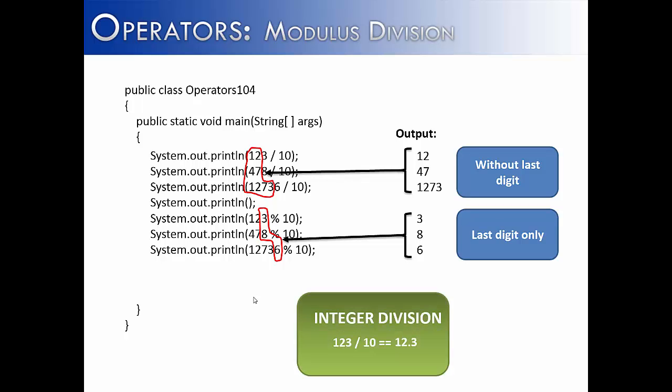Just to give you an example of what's happening to the top numbers, when you have 123 divided by 10, it would be 12.3 if we were using real division. But because we're using integer division, we know that the 0.3 is not going to be rounded. It's just going to be truncated or lopped off. So we would get 12.